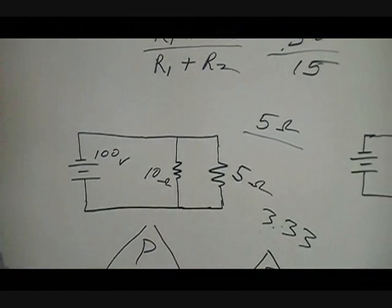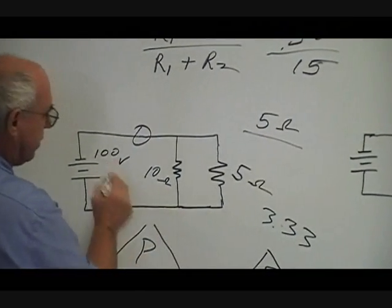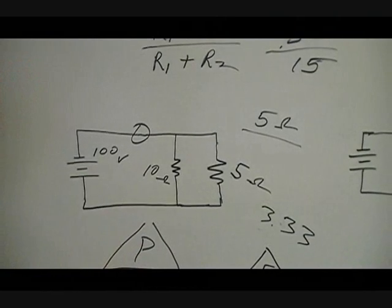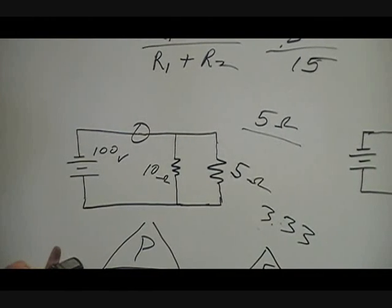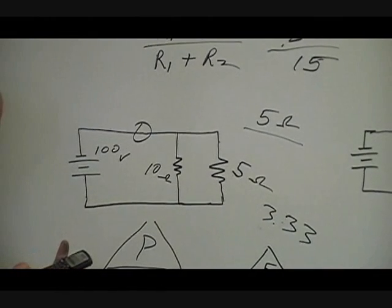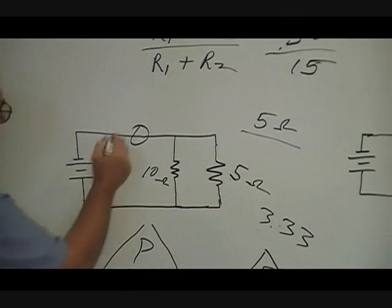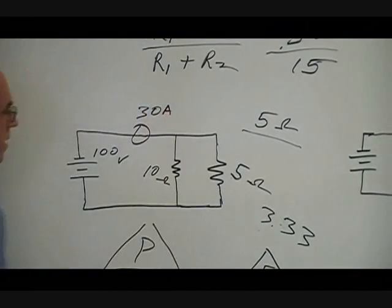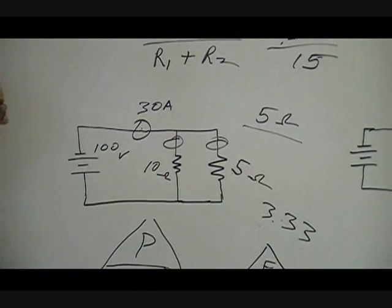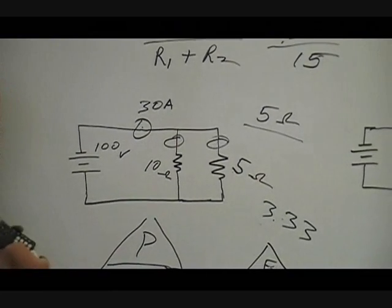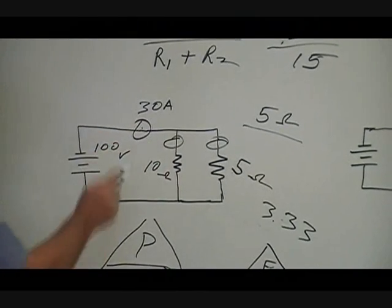Now how do we know what the current draw is for each one of these? Well, first of all, we can figure total current draw by taking the 100 volts and dividing it by 3.33, and that will give us our total current draw. Roughly 30 amps is what it's going to be. That's here, that's not here or here. Each one of these is going to have its individual amount of current draw, and if we do this correctly it should add back up to that 30 amps.